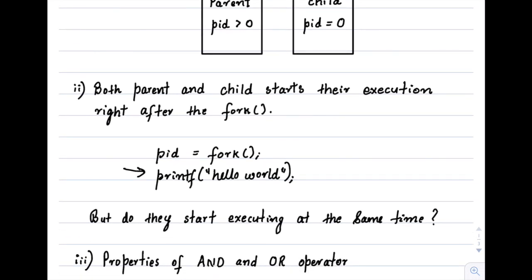An important question: do they start executing at the same time? If fork returned at some time T, will child and parent execute 'print hello world' simultaneously? The answer is no. As I've discussed in previous videos on process scheduling, it is a very complex process. If you have two processors, they may both execute at the same time, but this rarely happens since the scheduling algorithms are very complex. In most cases they will run at different times, depending on the process scheduler.